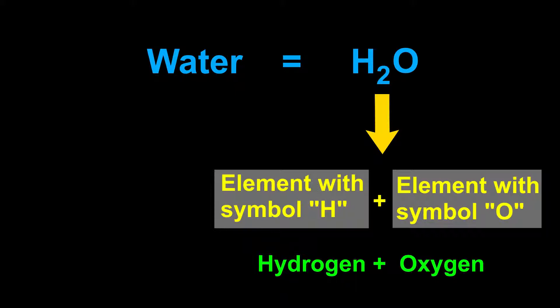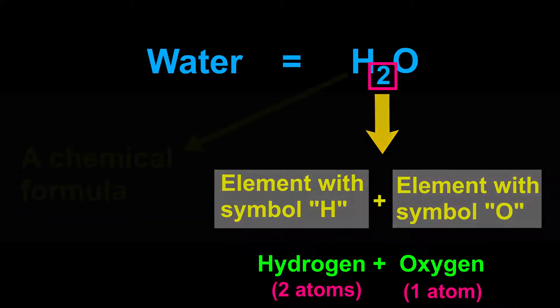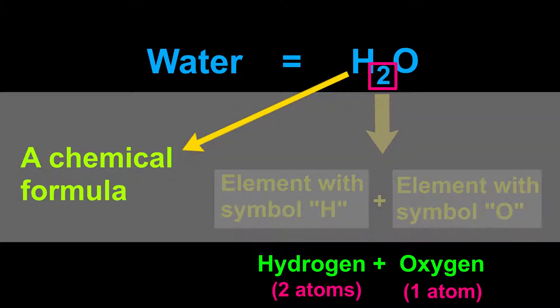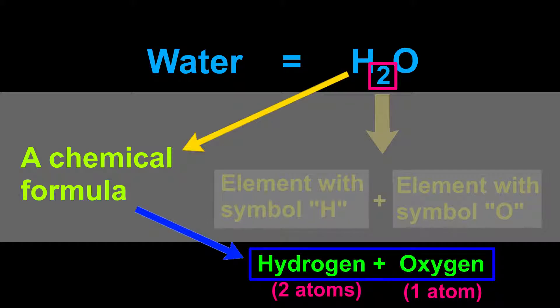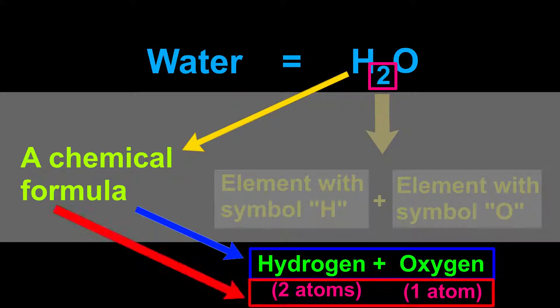From this formula, it is also evident that a water molecule has two hydrogen atoms and one oxygen atom. From this discussion, it is clear that a chemical formula provides information about the elements present in a molecule as well as the number of atoms of each element.